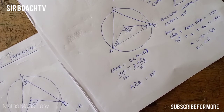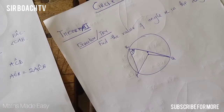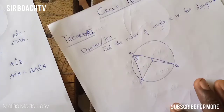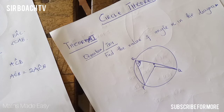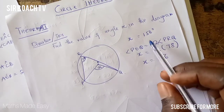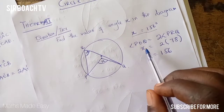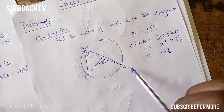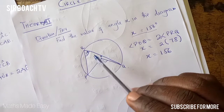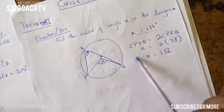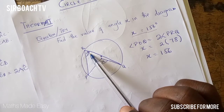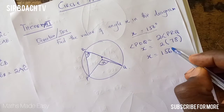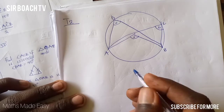That is all about the first theorem. Now before we move to theorem two, here is a practice question for you to try under the first theorem. Write it down, solve it, then play the video to see the answer. The answer should be x equals 156 degrees. The reason is that angle POQ equals 2 times angle PRQ. If PRQ is 78 degrees, then POQ equals 2 times 78 which gives 156 degrees.